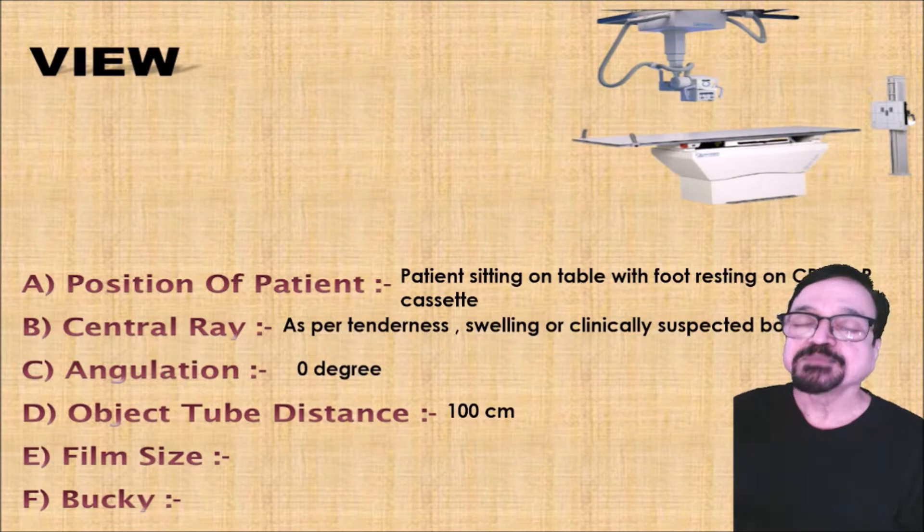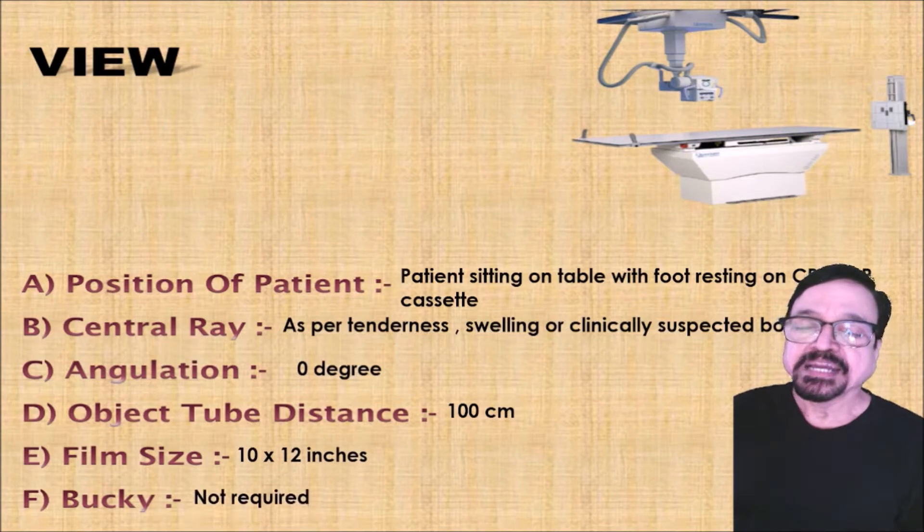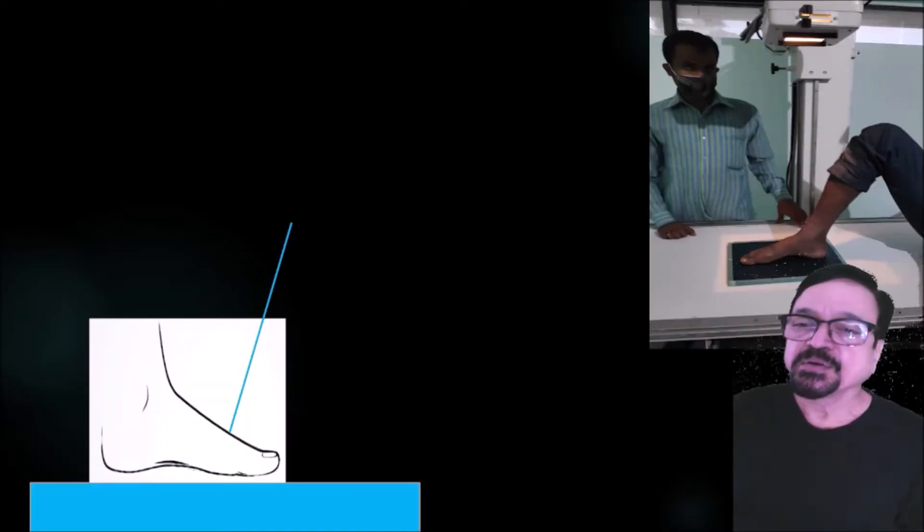Object distance is 100 cm, film size is 10 by 12, and bucky usually is not required. Now here we are showing two things: one thing is when the ray is straight and when the ray can be angulated.